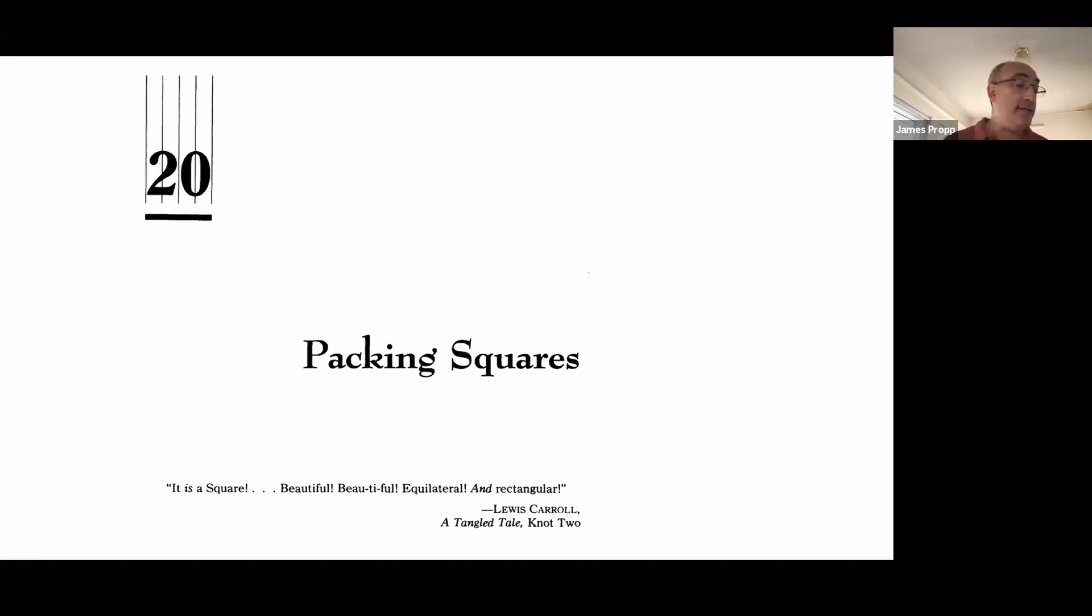Ron Graham and Paul Erdős found a way to tilt some of the squares and pack them in, so that the wasted area grows much more slowly, like n to the power of 7 elevenths, which is about 0.636. Later, Ron and his collaborator and wife, Fan Chung, found a more efficient packing in which the wasted area grows even more slowly, like n to the power of three fifths.